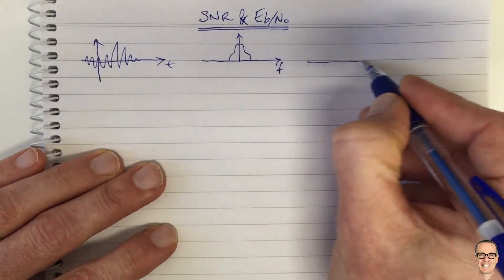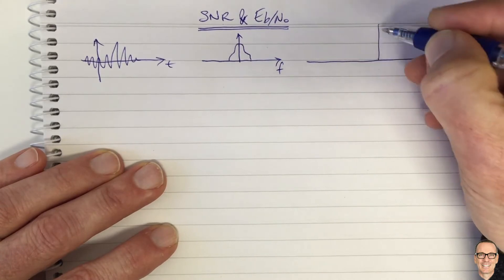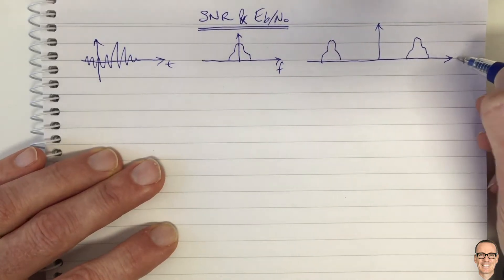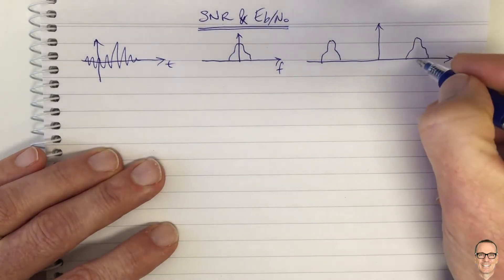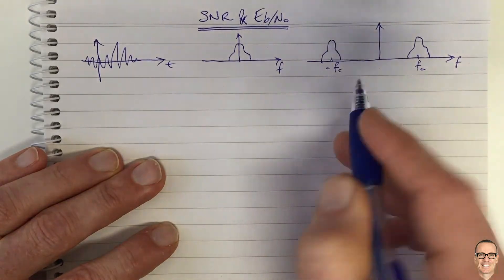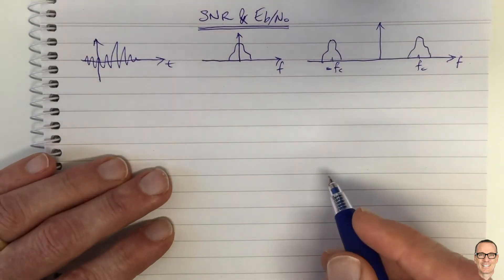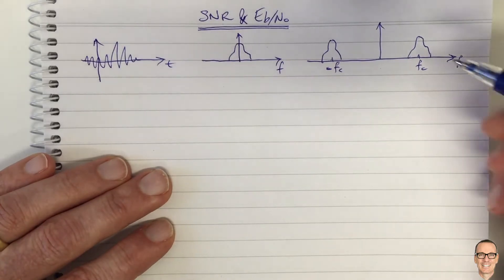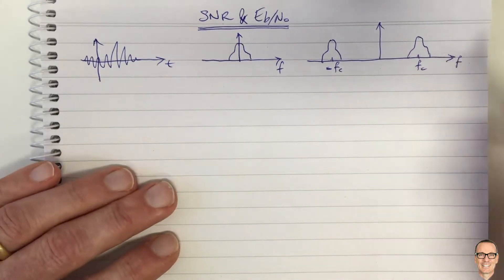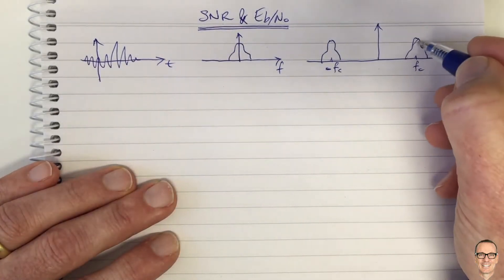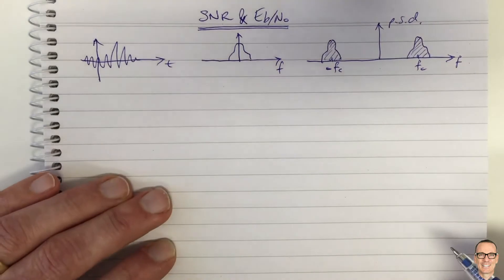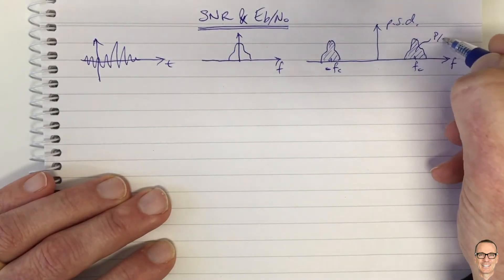Then I'm going to consider amplitude modulating it up to a carrier frequency for transmission. We're drawing the two-sided power spectral density. This is the power spectral density drawn here, and the power in this signal is the area under this curve. Because it's two-sided, this area is going to be power divided by 2.